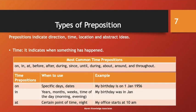Now we'll talk about types of preposition. Prepositions indicate direction, time, location, and abstract ideas. In the case of time, it indicates when something has happened. The most common time prepositions are: on, in, at, before, after, during, since, until, about, around, and throughout. Let's see a few examples.